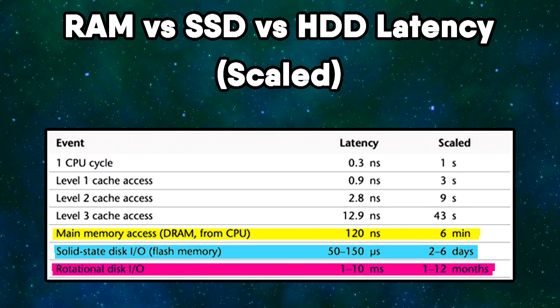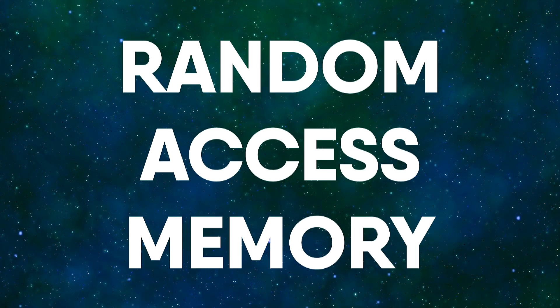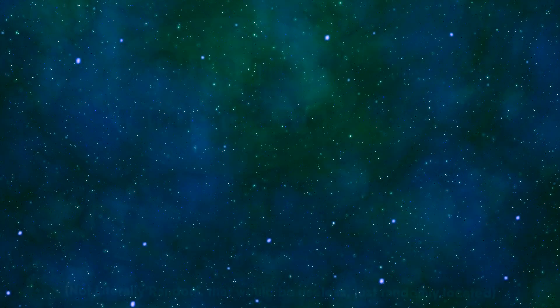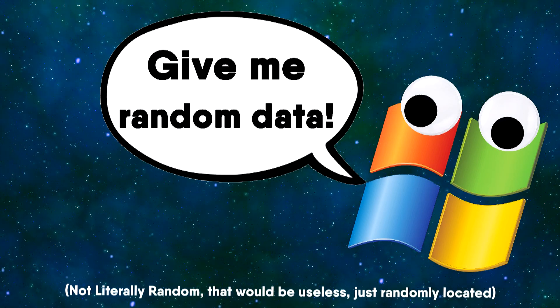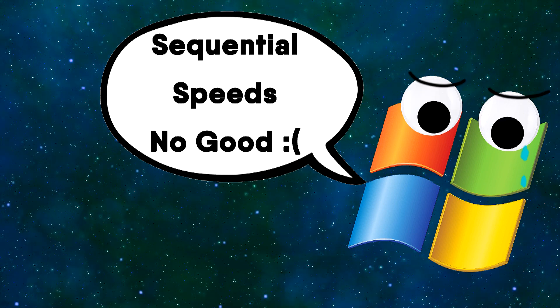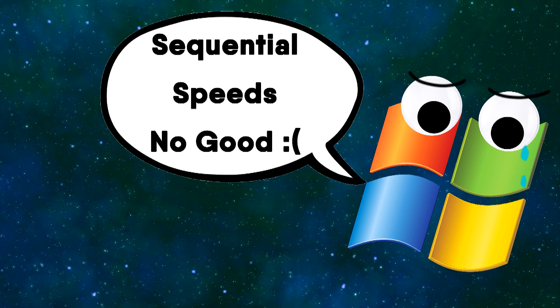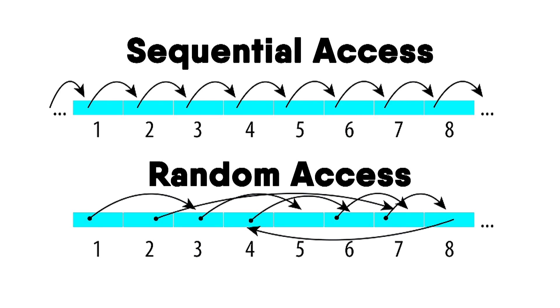One of the reasons RAM has such great latency is that it is perfectly optimized for random access — it's even in the name: random access memory. 90% of your operating system's calls are going to be for random chunks of data, so your OS sees very little benefit from the great sequential speeds of traditional hard drives and SSDs. Sequential access is great for data storage, but random access will always be king for operating systems.